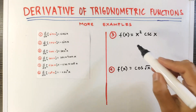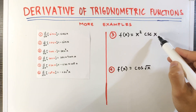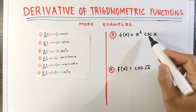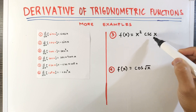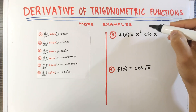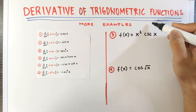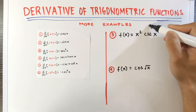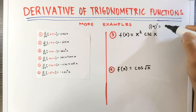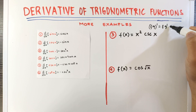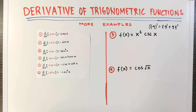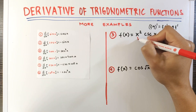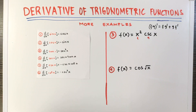Example number 3: f of x equals x squared times cosecant x. Note that the given function is a product of two functions, x squared and cosecant x, so we are going to use the product rule. Recall that the derivative of f times g is equal to f times the derivative of g, plus g times the derivative of f.